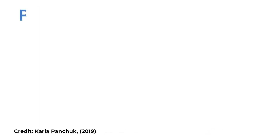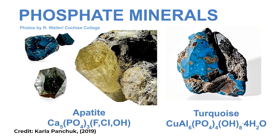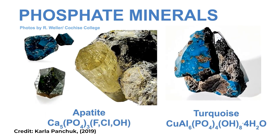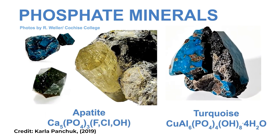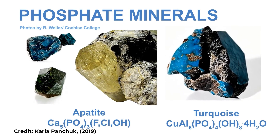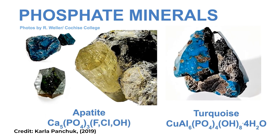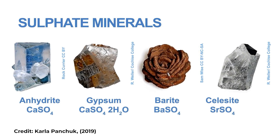Phosphates: apatite and turquoise are examples of phosphate minerals. Minerals in this group are similar in atomic structure to the silicate minerals. In the phosphates, phosphorus, arsenic, or vanadium bond to oxygen to form a tetrahedron. There are many different minerals in the phosphate group, but most are rare.